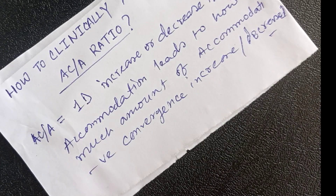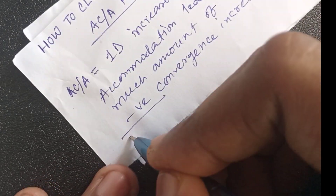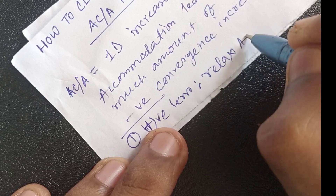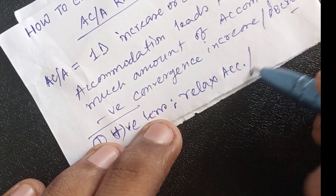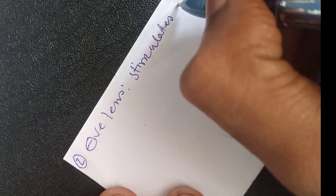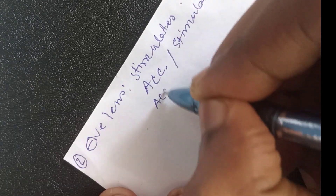There are many methods like the heterophoria method and gradient method for measuring the AC/A ratio, but we will discuss the practically applicable and easiest method today. For understanding this method, there is some basic knowledge you should have. First: a positive lens relaxes accommodation and thus also relaxes accommodative convergence. Second: a negative lens stimulates accommodation and thus also stimulates accommodative convergence.